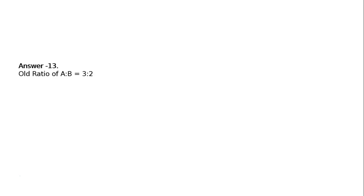Answer 13. Old ratio of A is to B is equal to 3 is to 2. New ratio of A is to B is to C is equal to 4 is to 3 is to 2. Sacrificing ratio is equal to old ratio minus new ratio.